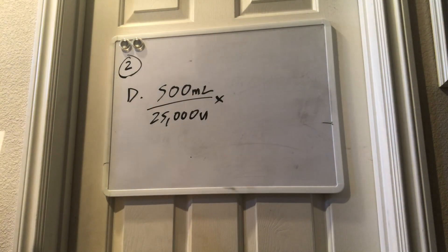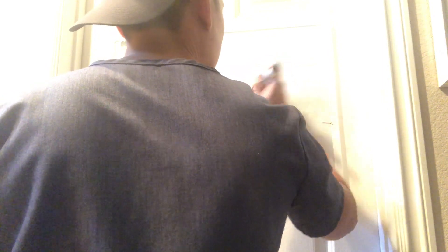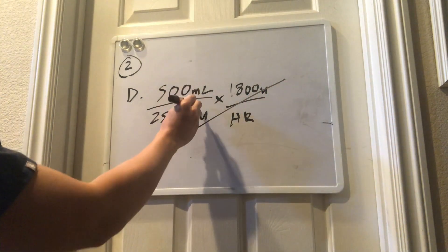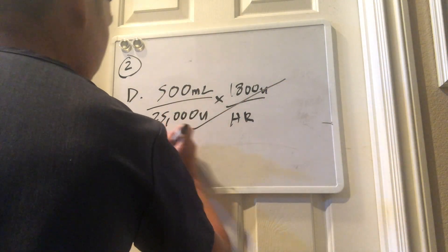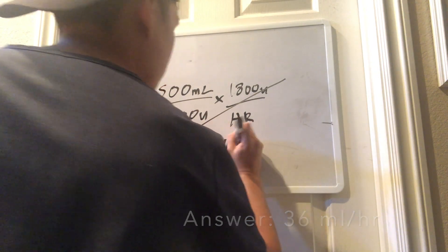And in addition to that, you take the answer from the previous question for the heparin infusion, which is 1,800 units per hour. And if you cross it out, to cross out the units, we're left with cc's per hour. You should be getting 36 cc's per hour.